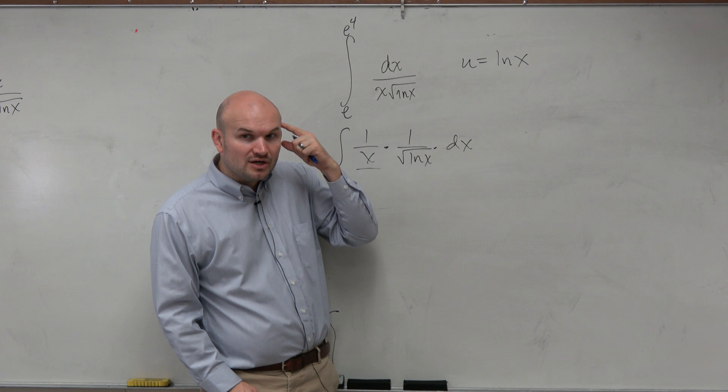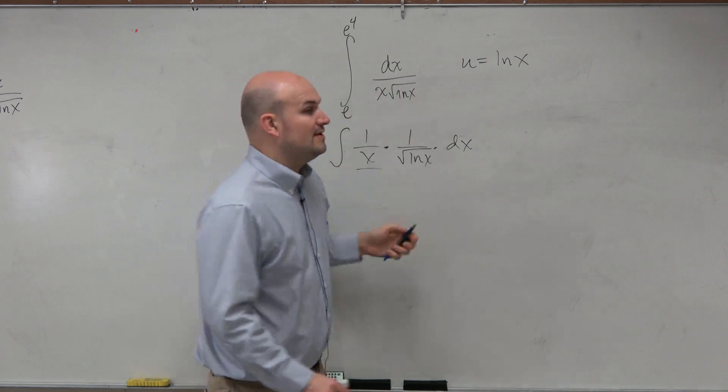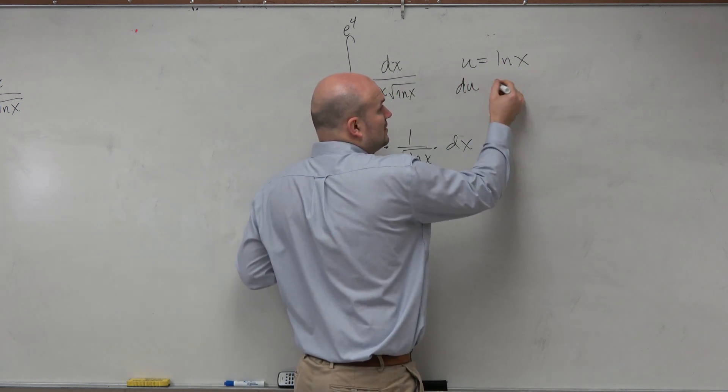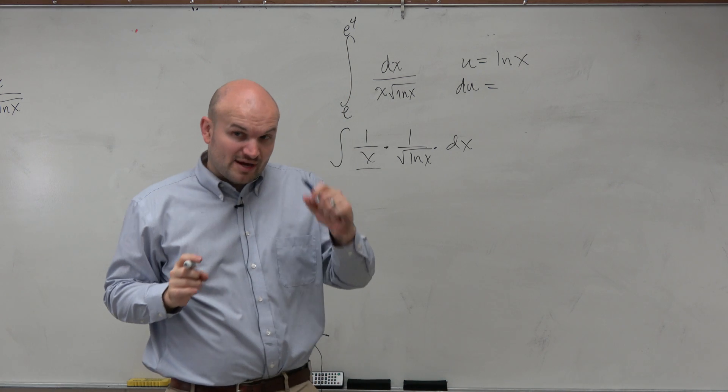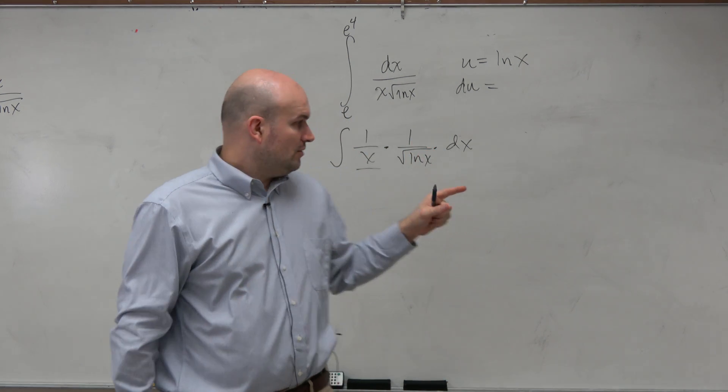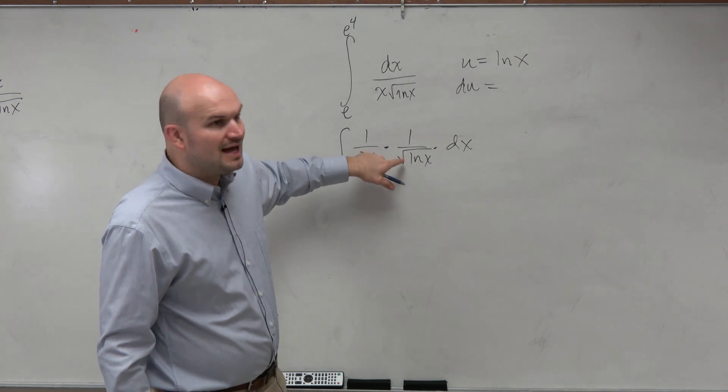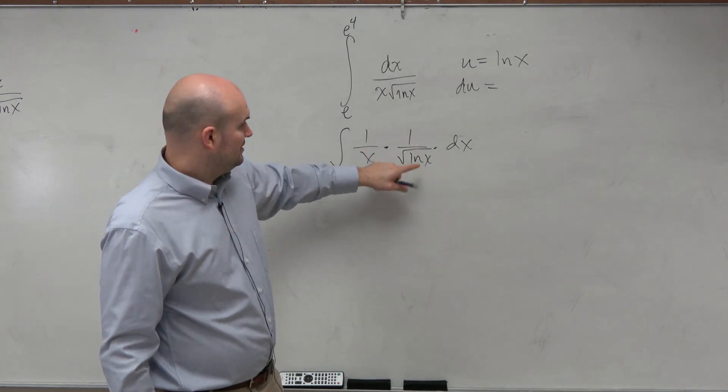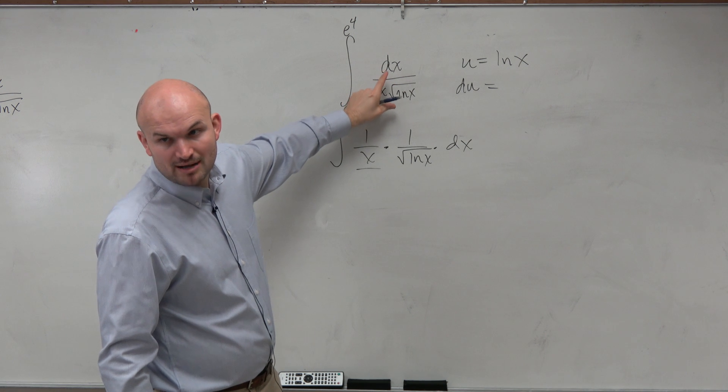So what I do in my brain to look, if this is going to be u substitution, then I know when I find du, the derivative of my u and dx have to be in there. Well, the derivative of the square root of ln of x is not apparent in this problem.